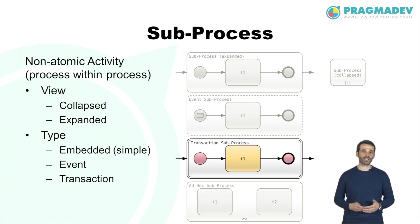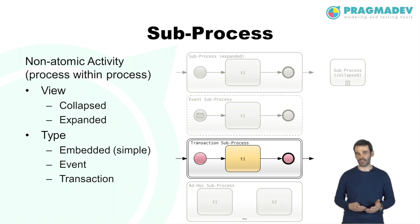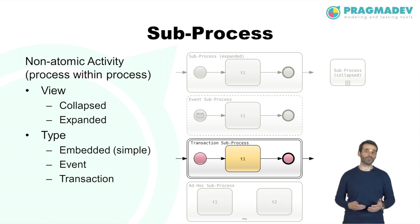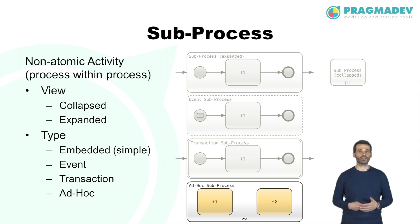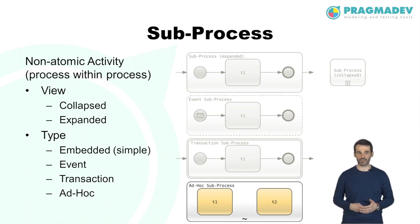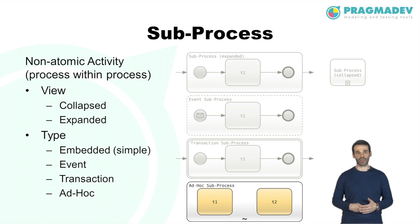A transaction is a specialized type of subprocess with special behavior controlled through a transaction protocol. Like the embedded subprocess, it is part of the normal flow of the parent process. An ad hoc subprocess is a specialized type of subprocess that is a group of activities with no required sequence relationships, meaning activities within it are generally disconnected from each other.